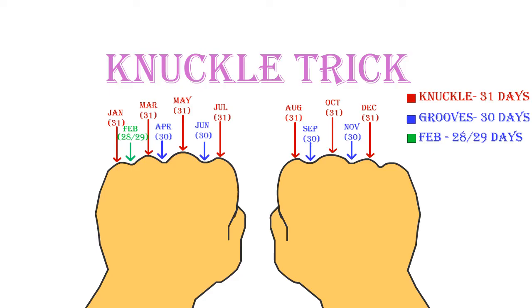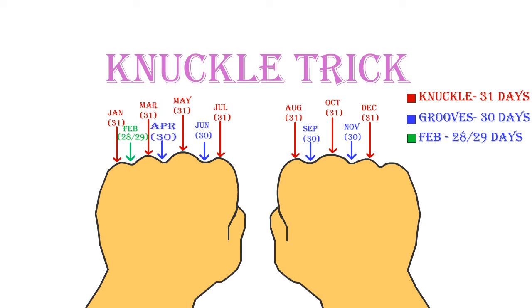It should be noted that the two knuckles where your hands meet denote July and August, which both have 31 days. We start with January on the knuckle, so February comes in the groove, March comes on the knuckle, and April comes in the groove, and so on. The last knuckle isn't used.